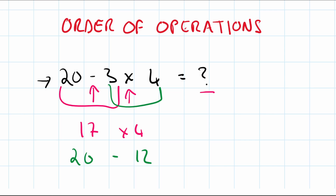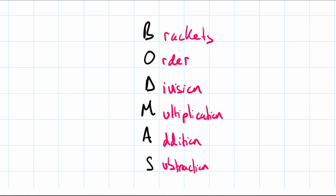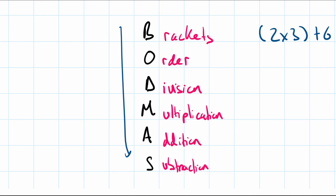In maths we have an established system for working out the order in which operations should be done — that is called BODMAS. It's an acronym that lays out the priority order. The first operation is Brackets, so anything in brackets is what you do first. For example, in 2 times (3 plus 6), you do the brackets first.